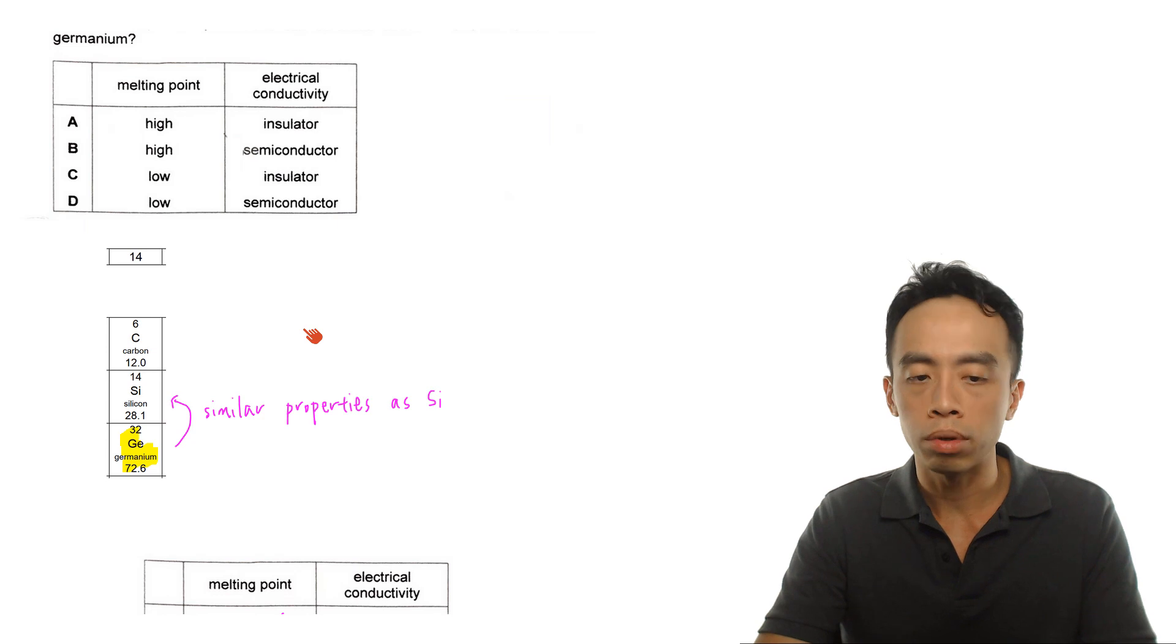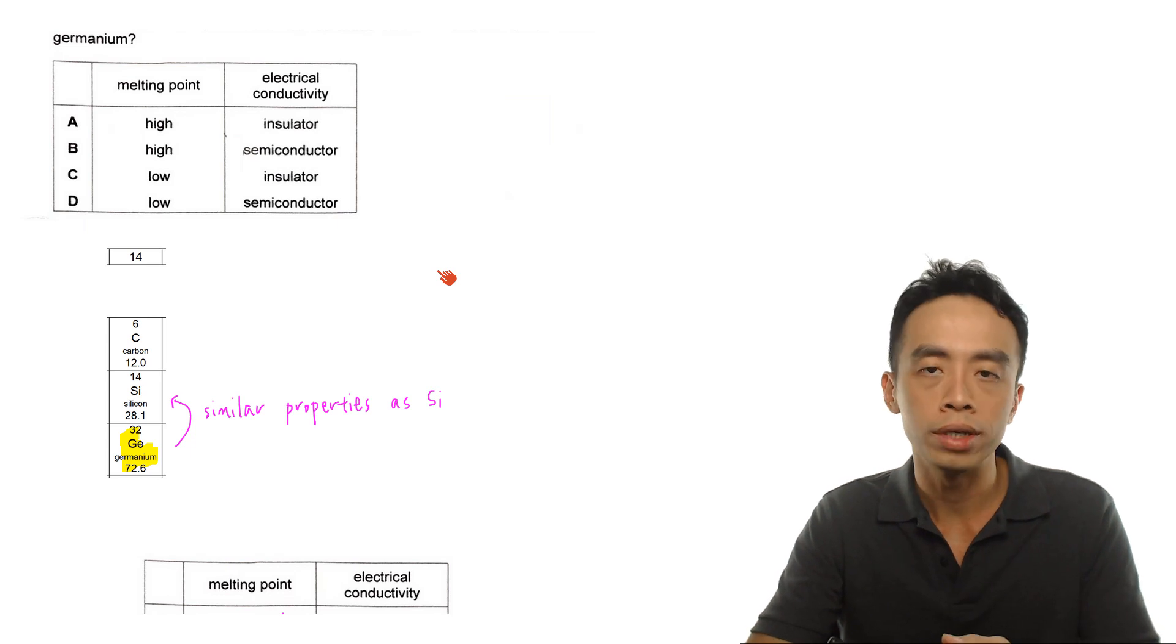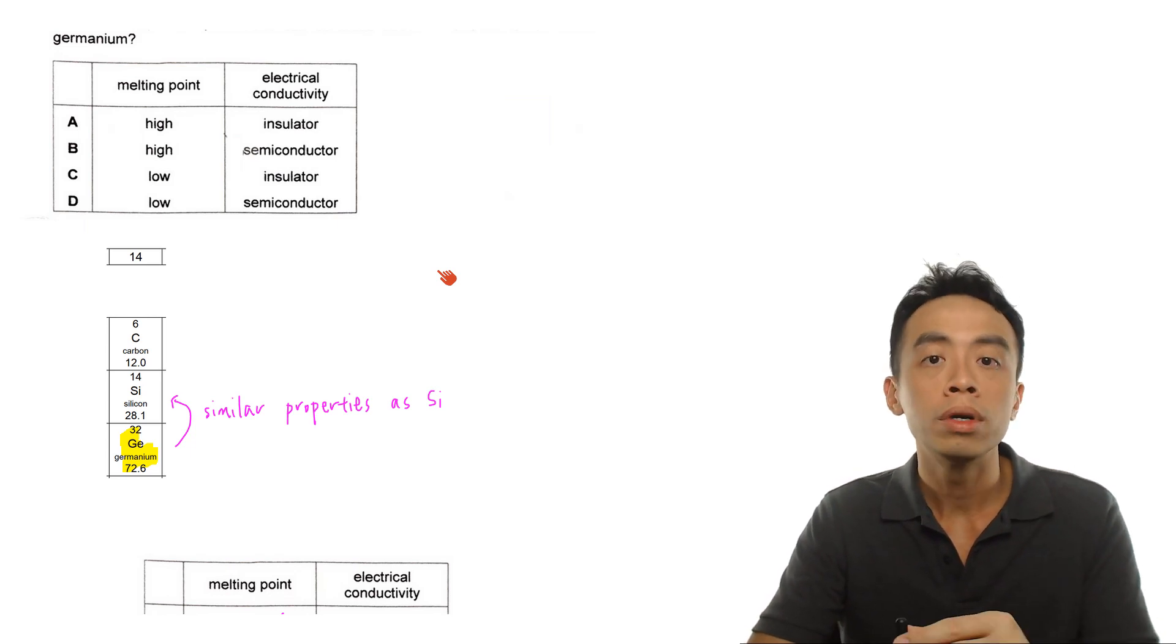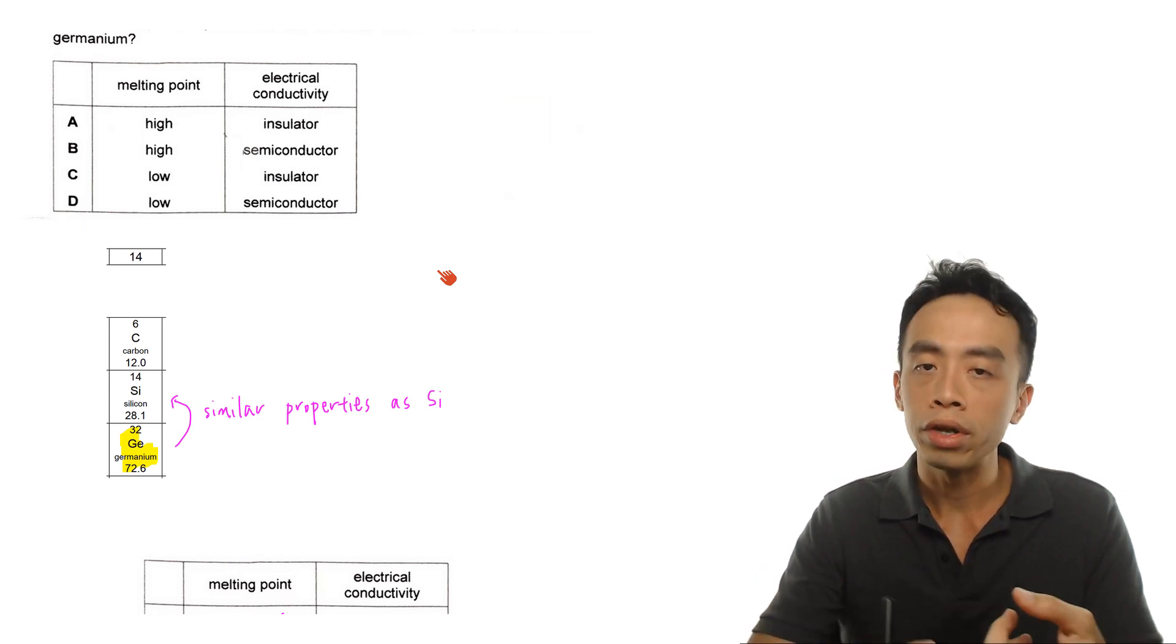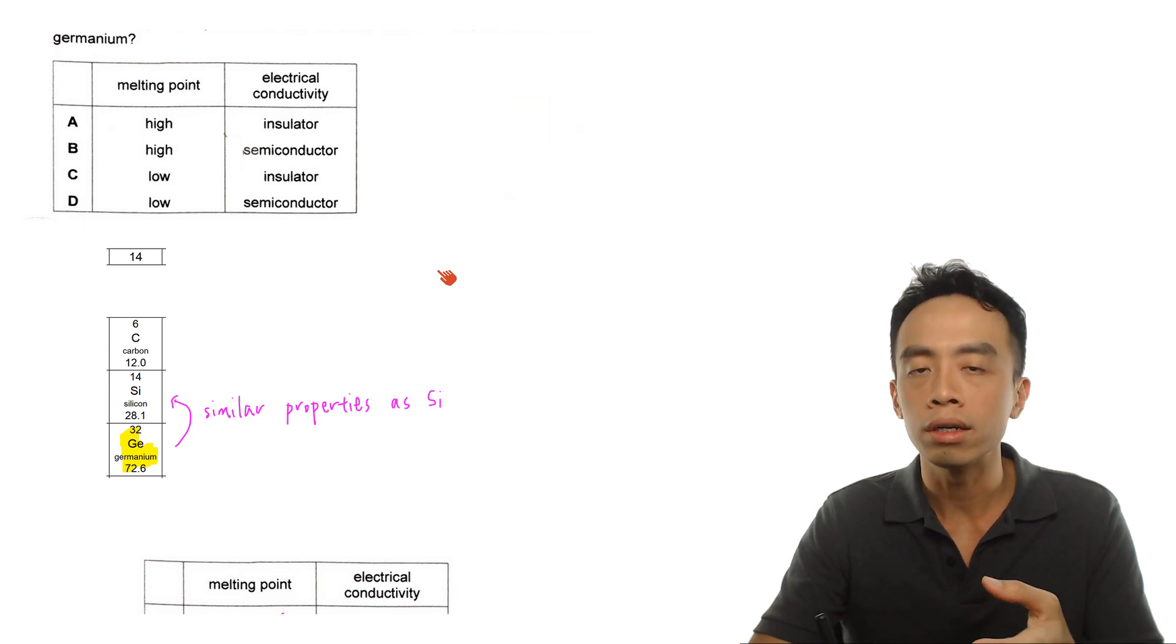In terms of the properties, it will be similar to silicon. We usually assume this to be the case. If they are in the same group, then they will have the tendency to gain or lose the same number of electrons. So in terms of reactivity and physical and chemical properties, they would be similar.